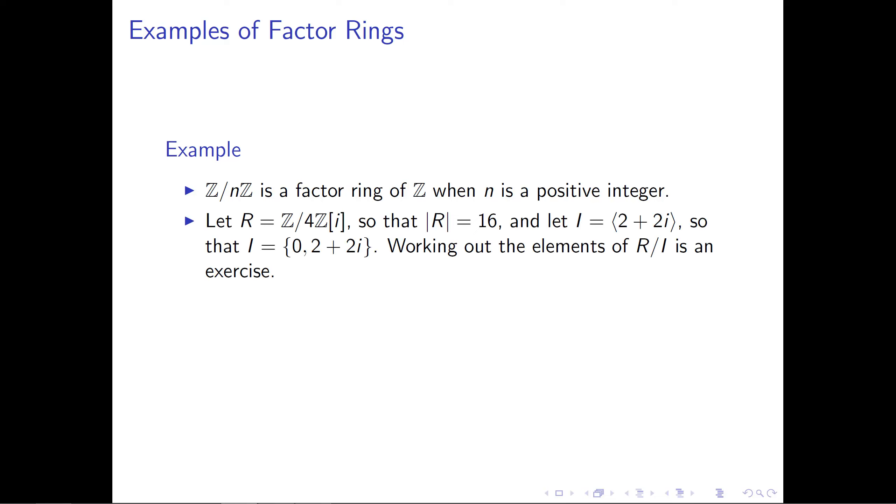Now, if you let R be the ring Z mod 4Z adjoint i, so R has size 16, something that you should be able to work out. What I'd like you to do is let I be the ideal generated by the element (2 + 2i). When you do this, you should double check that I is really just a subring with two elements, the additive identity 0 and the element (2 + 2i) itself.